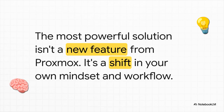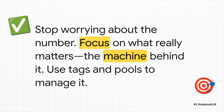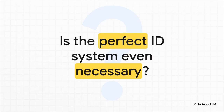We could all sit around and wait for Proxmox to release some brand new feature that solves this. But the most powerful solution you can implement right now, today, isn't a software update — it's a personal one. It's about shifting your own mindset, your own workflow. Just stop worrying about the number. Let it be messy, let it have gaps — who cares? Instead, put that energy into what actually matters: the machine itself, the application it's running, the service it provides. Use the great tools Proxmox already gives you, like tags and pools, to manage that. In this world of powerful search, tags, and automation, do we even need a perfect human-readable ID system anymore? Or is that just a leftover idea from a time when we treated our servers like pets instead of cattle?